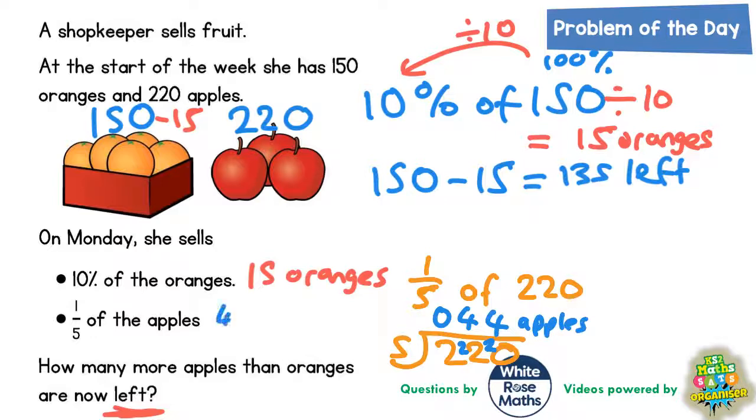So 44 apples sold. But again, we need to figure out how many she's got left. So if she started with 220 and she is selling 44, that means we are subtracting 44 from 220.